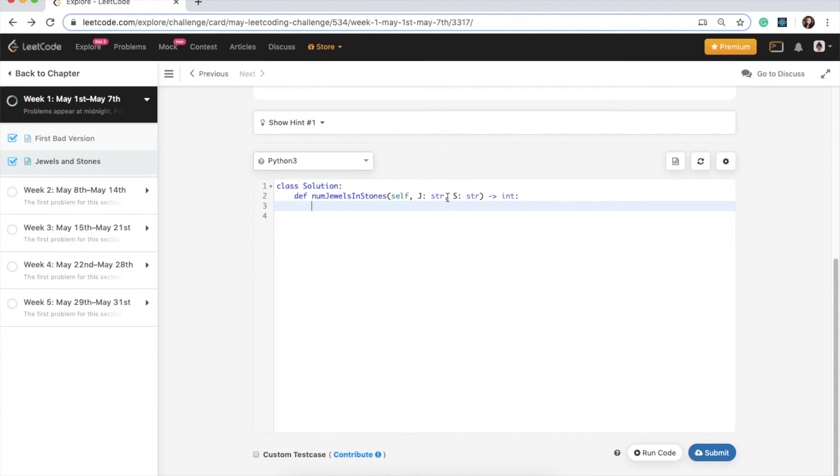So the first thing we need to do is create our set, so we can call it check_j and we can say equals set, and we will insert all the elements in J here. The next thing we need to do is set our total to zero, and this is how we will initialize our total and increment it if we find it in J.